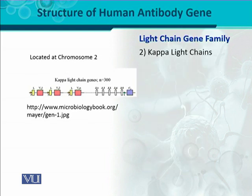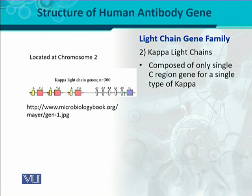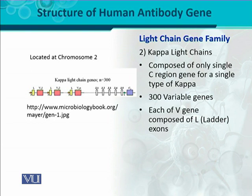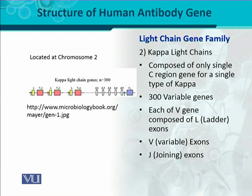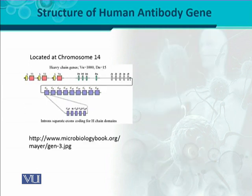The second light chain is the kappa light chain. Its gene is located on chromosome number 2, and it is composed of a single C region because there is only one type of kappa — that is why a single kappa constant region is present, shown here in purple as C1. There are more than 300 variable genes present in this case. The V genes are composed of a leader region, same as in lambda, with variable exons and joining exons. In between V, J, and C there are intervening regions called introns — these are non-encoding regions — while V, J, and C are exons, which are encoding regions.